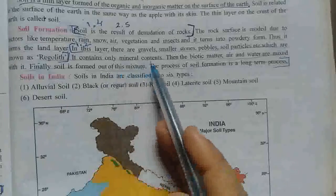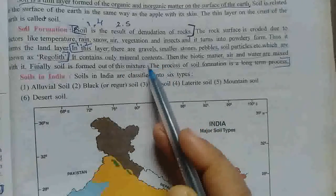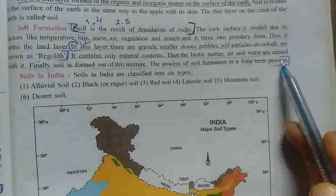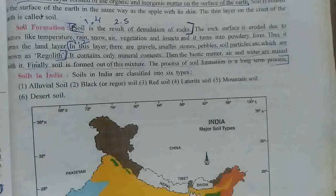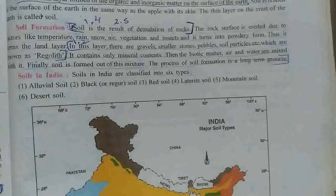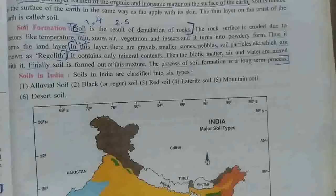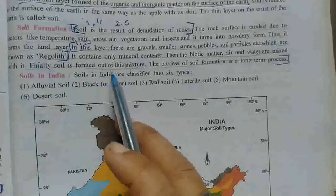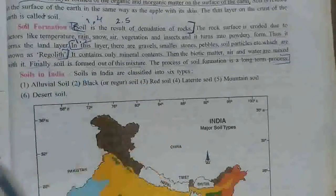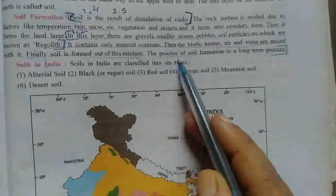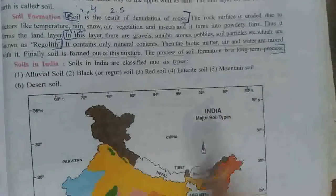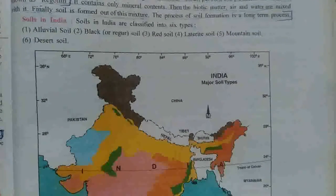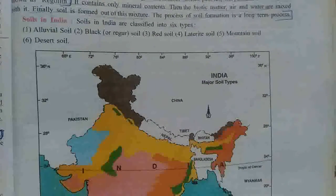After regolith contains only mineral contents, then biotic matter, air and water are mixed into it. जिसके बाद regolith के अंदर biotic matter, air और water mix होते हैं, and finally soil is formed out of this mixture. The process of soil formation is a long term process — ये जो process है वो long term process है, ऐसा नहीं है कि तुरंत ही form हो जाता है, this takes a long duration.